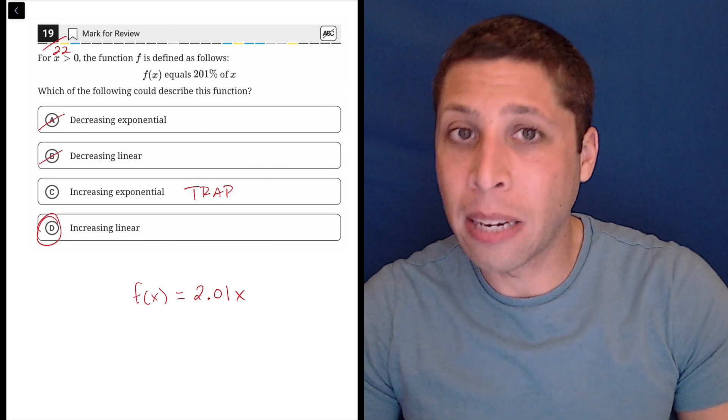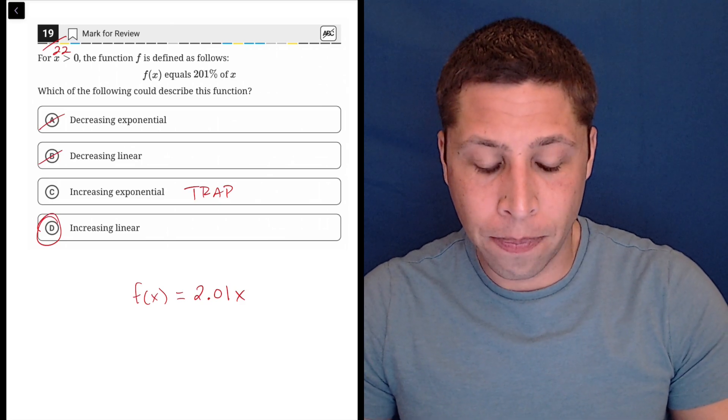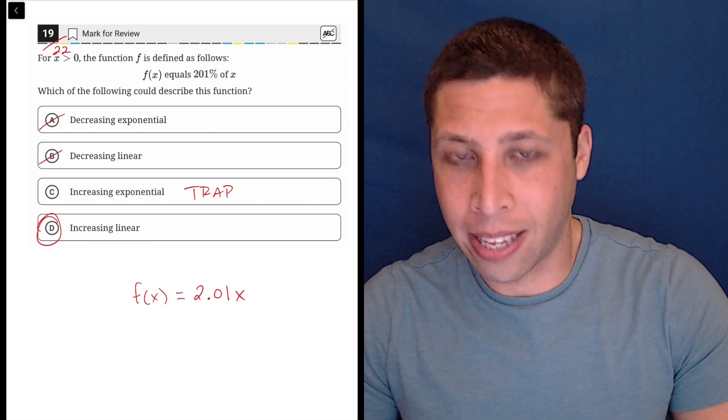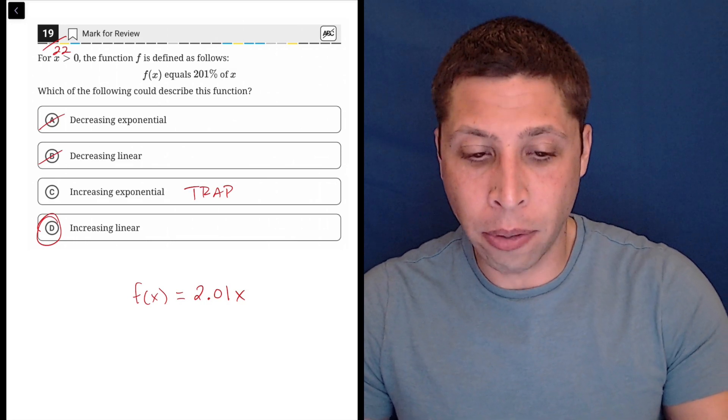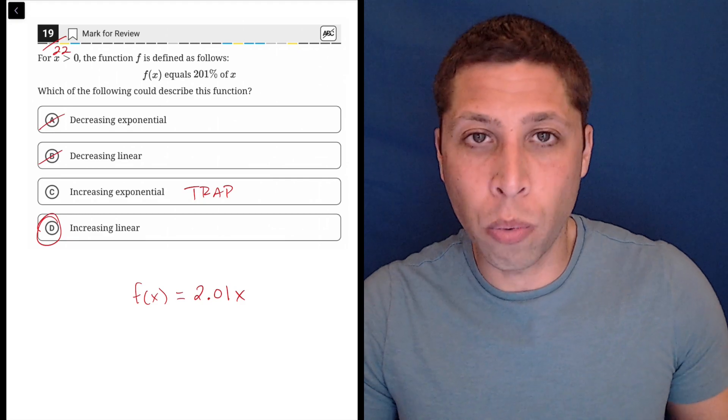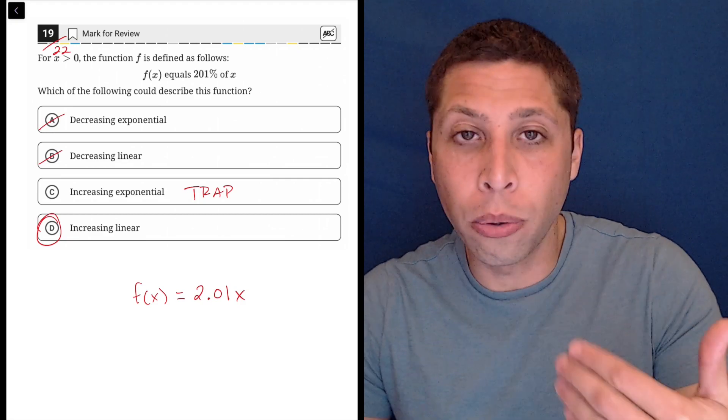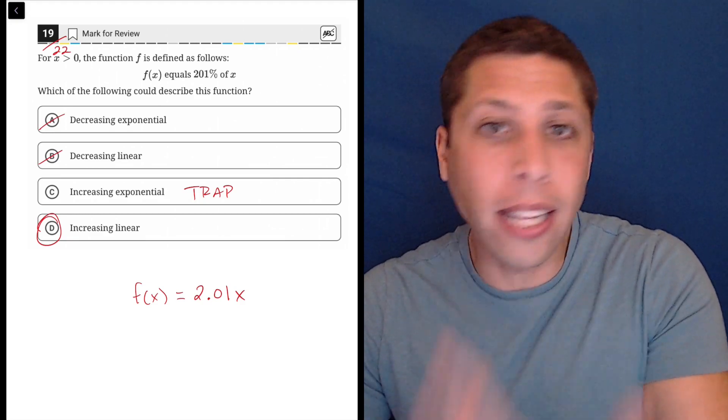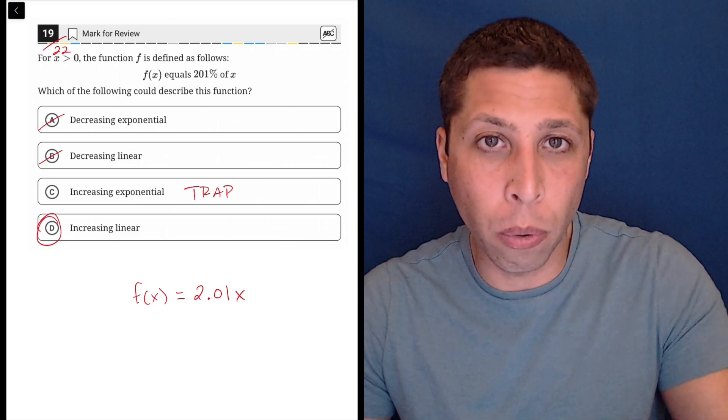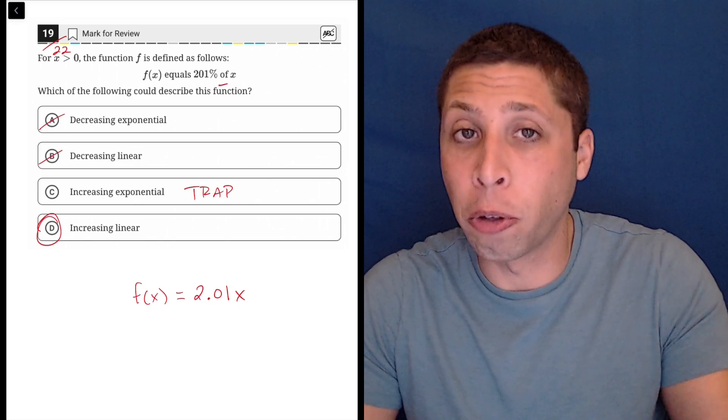Maybe that's the way to think about it is if you were to translate this like I did, there is no word that suggests an exponent. There is no word that says to the x or to the t or anything like that. Of is very simply multiplication.